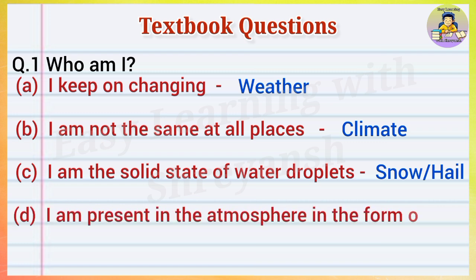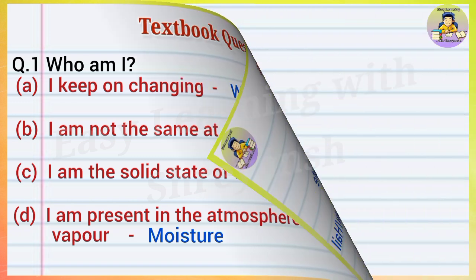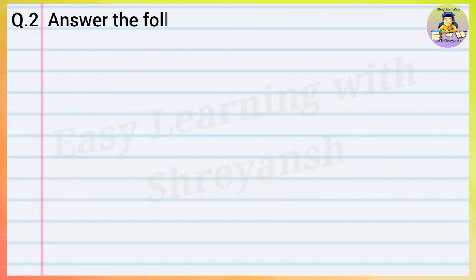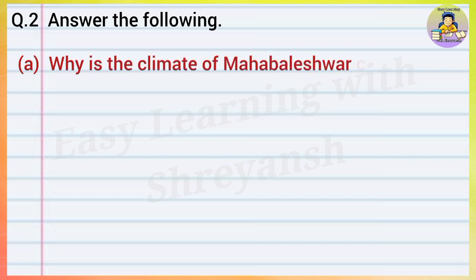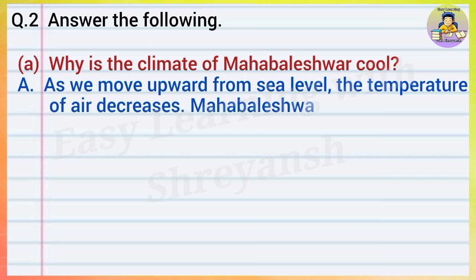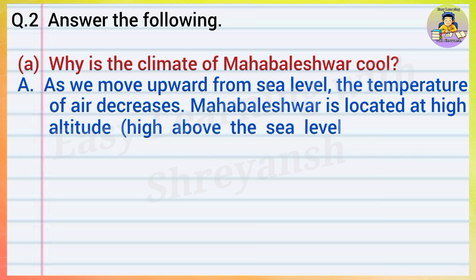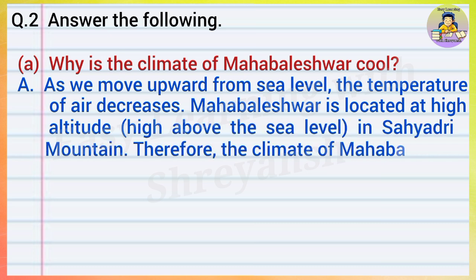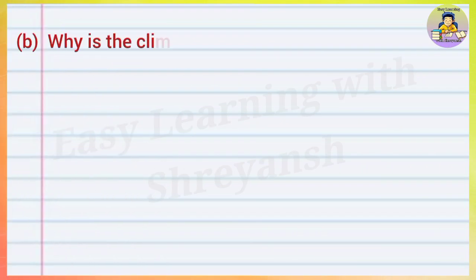(d) I am present in the atmosphere in the form of vapor - Moisture. Question number two: Answer the following. (a) Why is the climate of Mahabaleshwar cool? Answer: As we move upward from sea level, the temperature of air decreases. Mahabaleshwar is located at high altitude, high above the sea level in Sahyadri mountains. Therefore, the climate of Mahabaleshwar is cool.